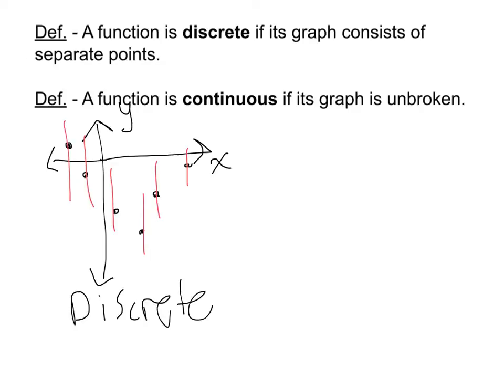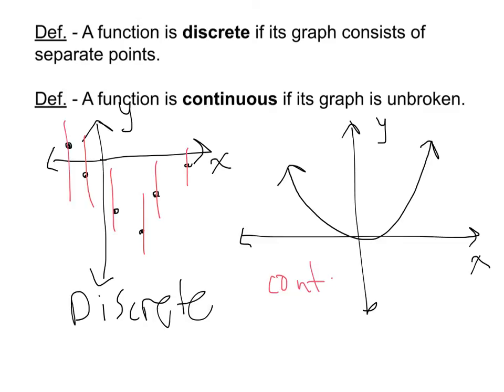Next, we have a continuous function where the graph is unbroken. Okay, that's your typical curve. It could be a parabola like we saw, and notice every x value is hit. There's no separations in between, and so we would call this a continuous function because it's unbroken.